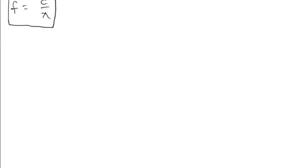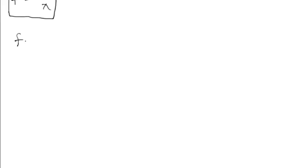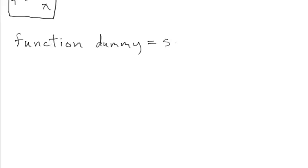I'm looking for a name based on the physical quantity we're looking for — wavelength or frequency. I'm trying to cook up reasonable names. This function doesn't return anything, so I'll indicate that by using the name 'dummy' for the return variable. I'm calling it 'show_emradinfo'.